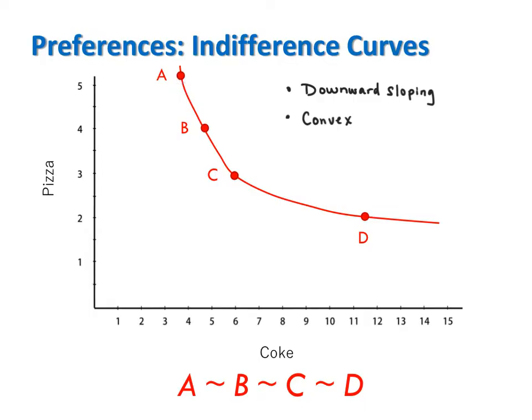Say we're at point A, consuming roughly three units of coke and roughly five units of pizza. If we give this consumer more coke, moving from A to B, that's going to make them better off. In order to keep them indifferent, or as well off, more coke has to come with less pizza. In other words, there has to be a trade-off. When both goods are good goods, the only way to keep someone as well off when giving them more of one good is to take away some of the other. This is why indifference curves are downward sloping when we assume monotonicity of preferences holds.